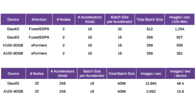Stability AI, the developers behind the popular Stable Diffusion generative AI model, have run some first-party performance benchmarks for Stable Diffusion 3 using popular data center GPUs, including the NVIDIA H100 Hopper 80GB, A100 SXM 80GB, and Intel's Gaudi 2 96GB Accelerator.